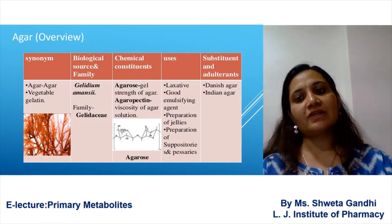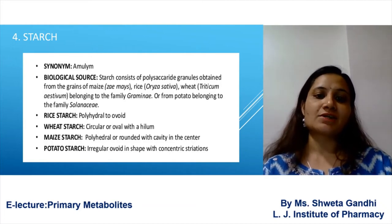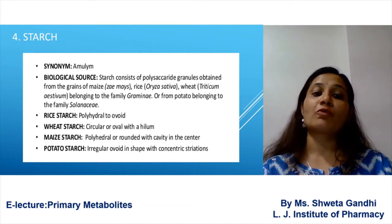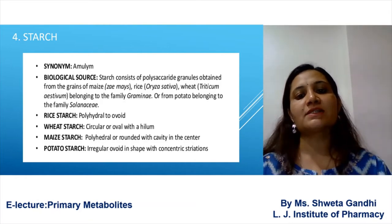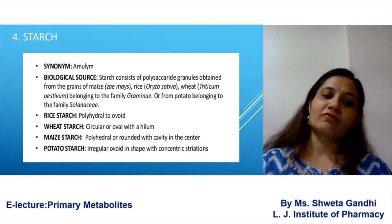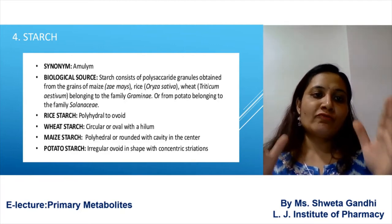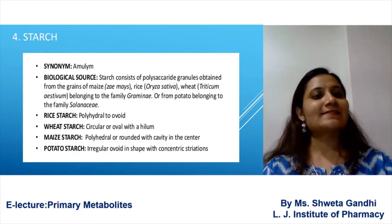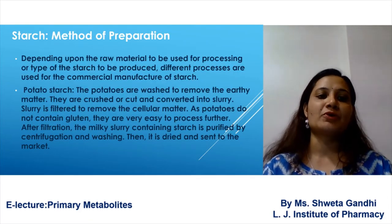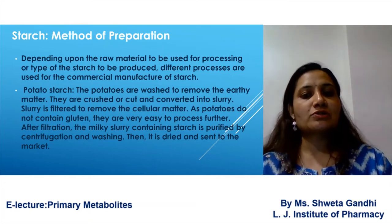Next is starch. The major sources of starch are: maize, known as Zea mays; rice, known as Oryza sativa; wheat, known as Triticum aestivum; and potato starch, obtained from the potato. These are the four basic sources of starch.